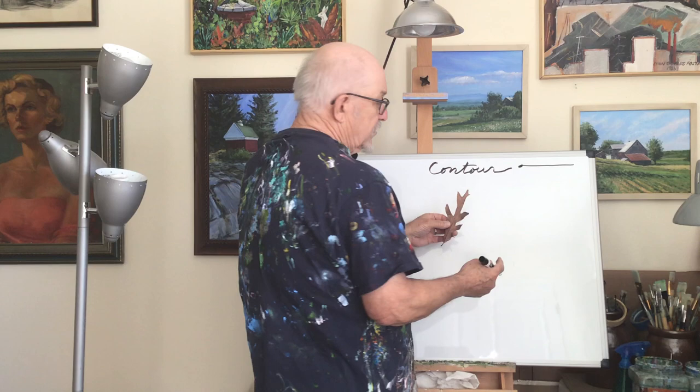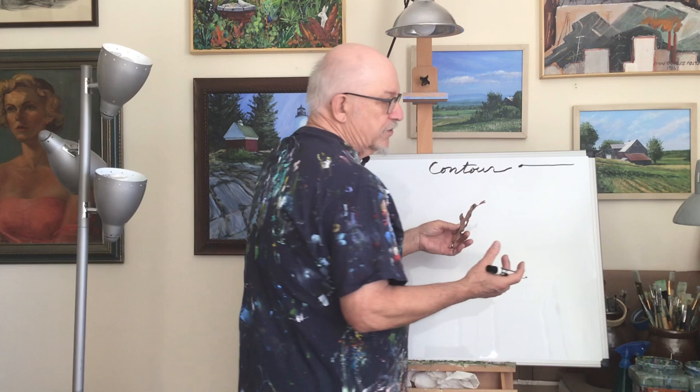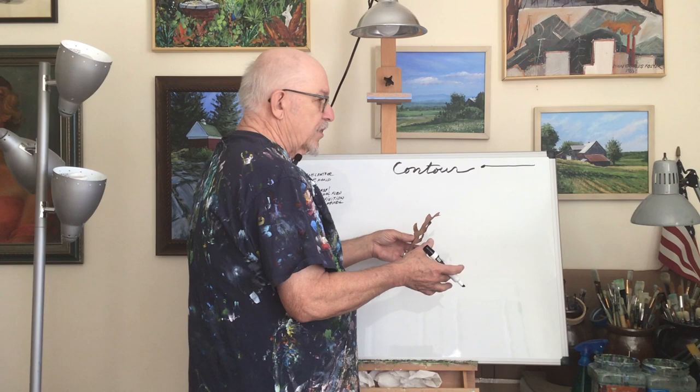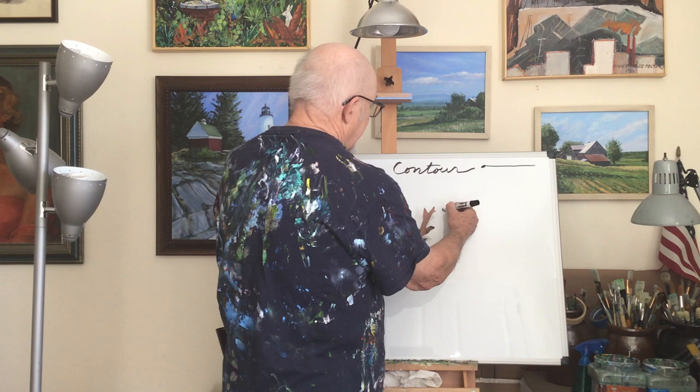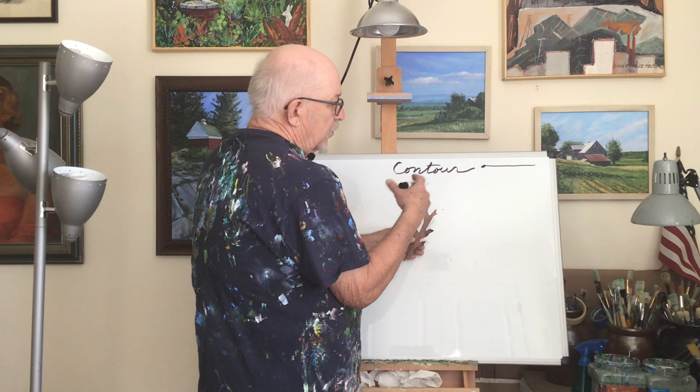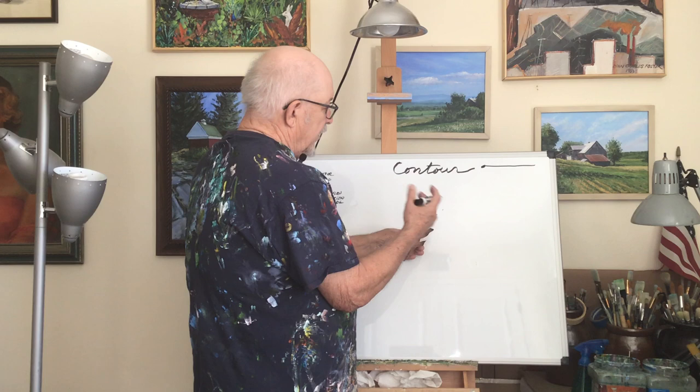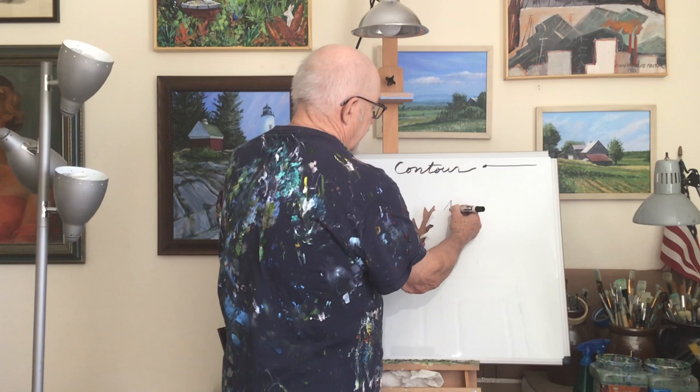It's best to do this with a pen, so you won't be tempted to stop and erase. As soon as you erase you break your visual connection — then you start looking at your paper and you don't know where you are. So just go ahead and use a pen. Find a point where you want to start. Now I'm going to show the difference between contour drawing and blind contour. In blind contour you are not supposed to look down at your paper at all, but in regular contour you can.